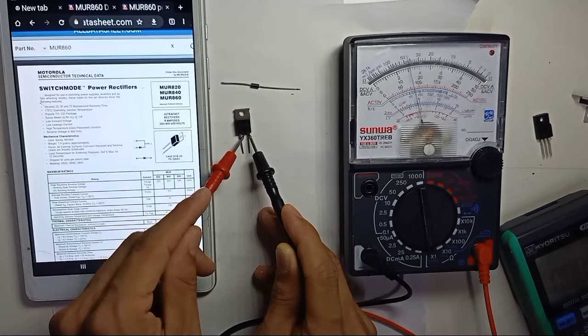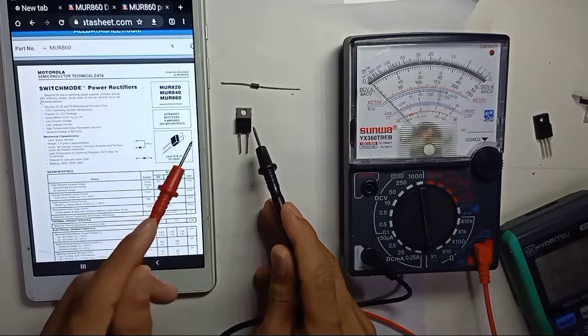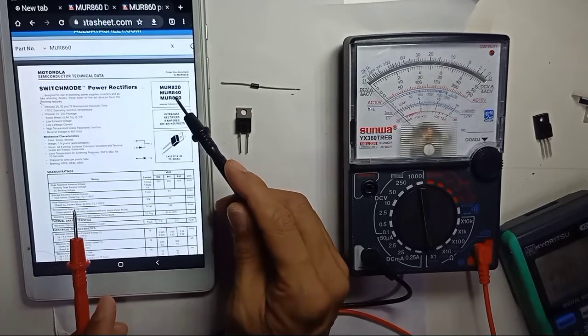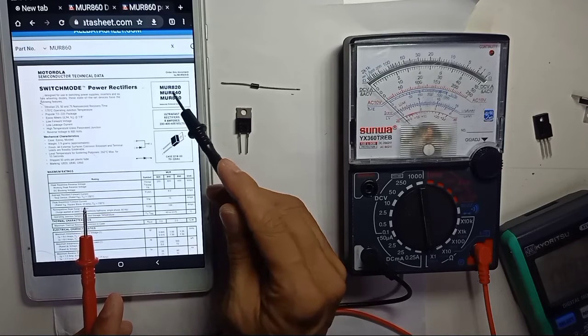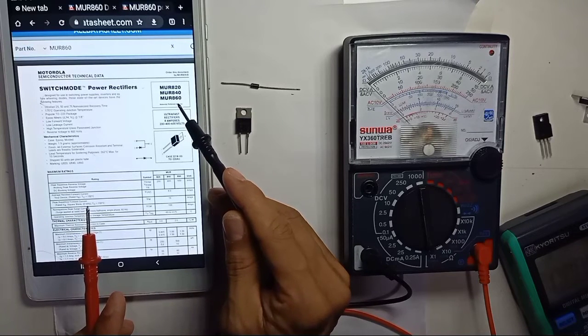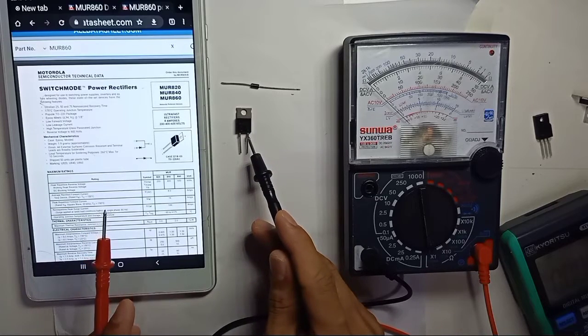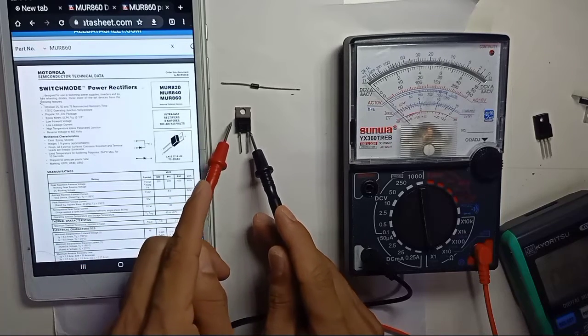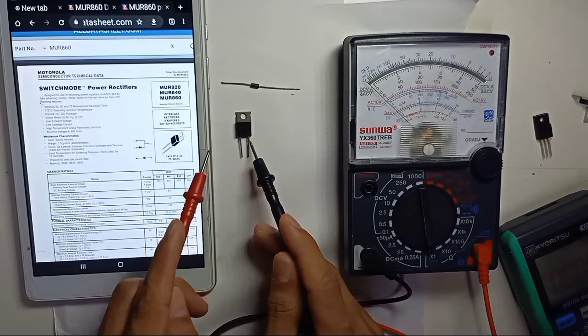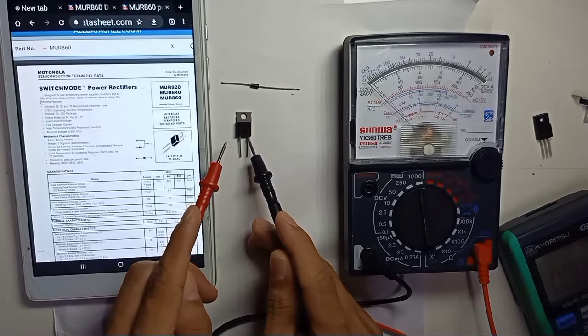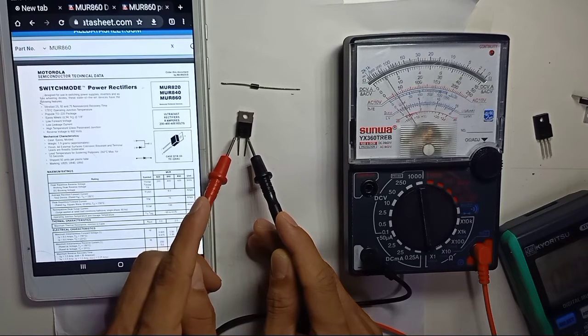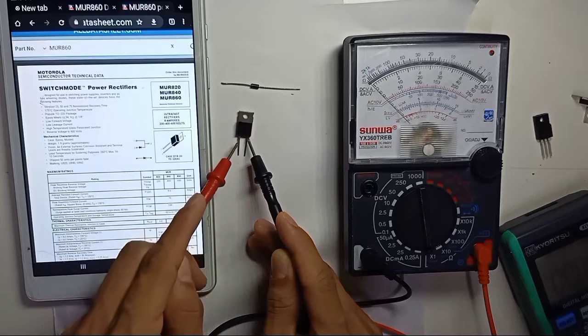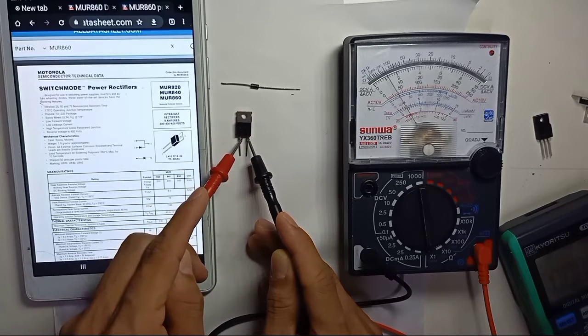All the MUR part numbers, whatever you have, whether smaller or bigger, the way of testing is the same. Two pins of the diode always test for one-way flow, just like exactly the normal diode.